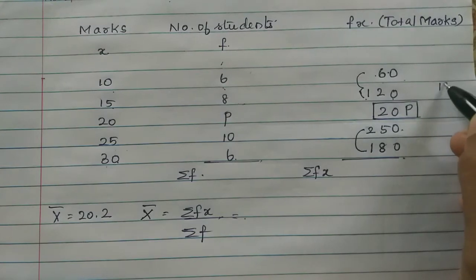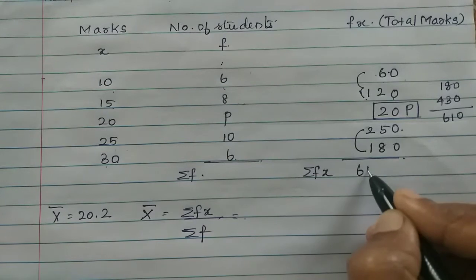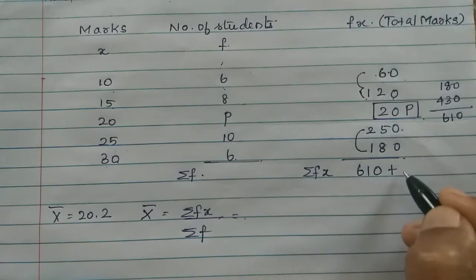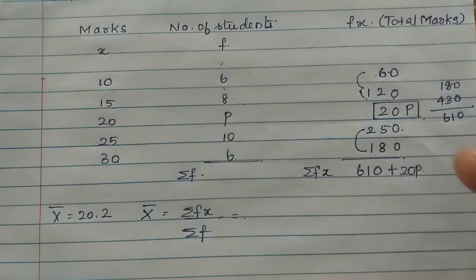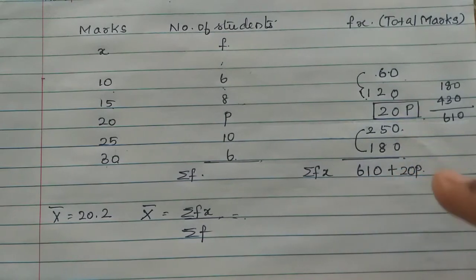If you add everything together, 60 plus 120 is 180. Then 250, 180. So the numbers add to 610 plus 20P. So Sigma fx is 610 plus 20P.